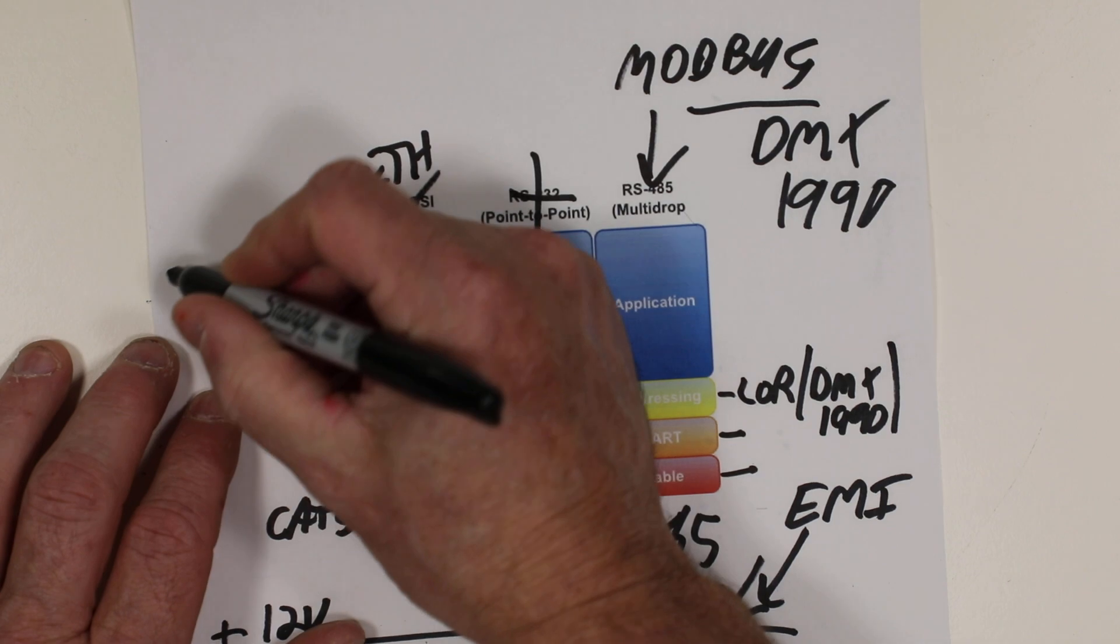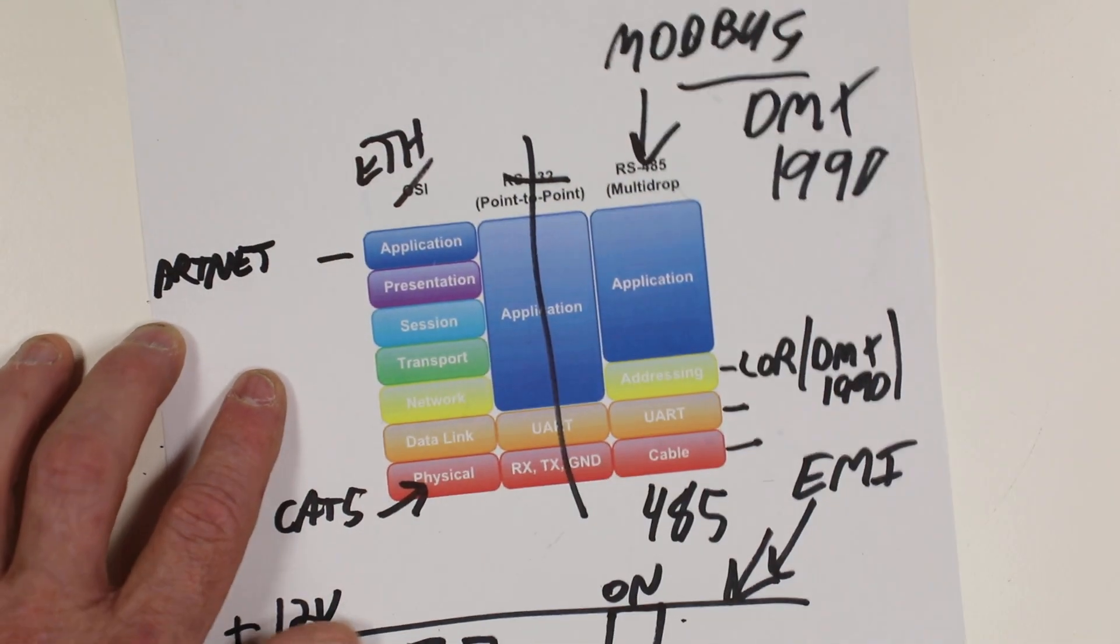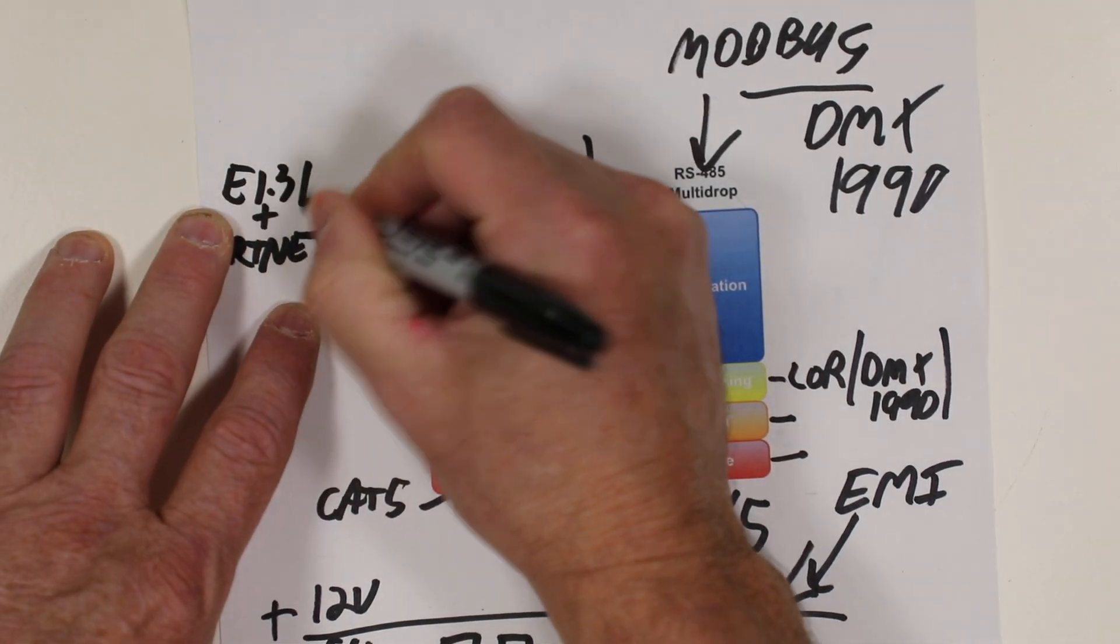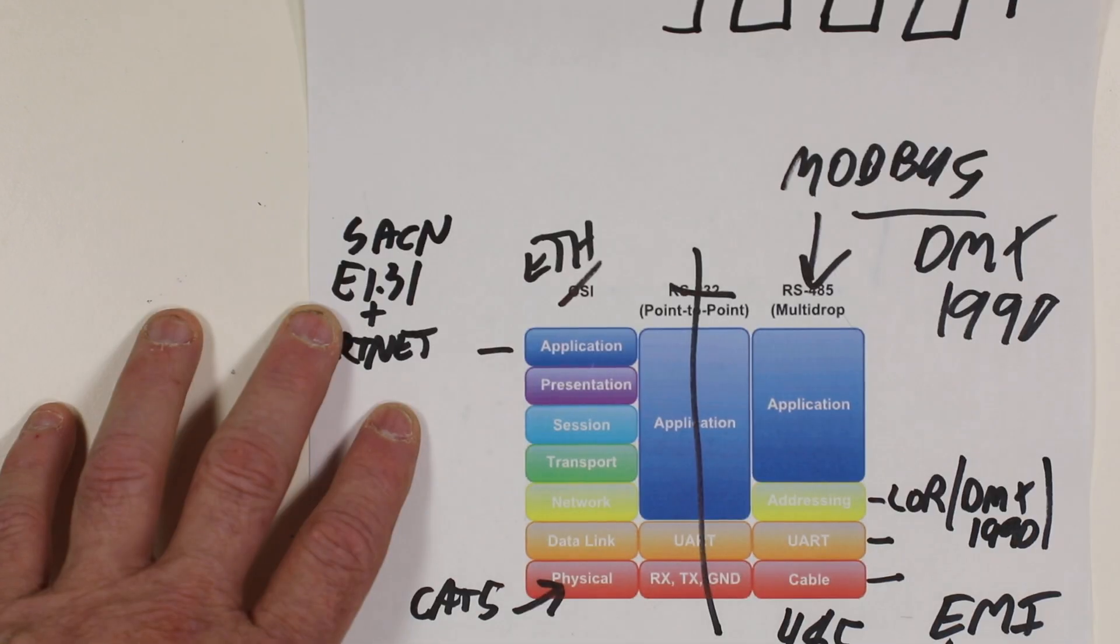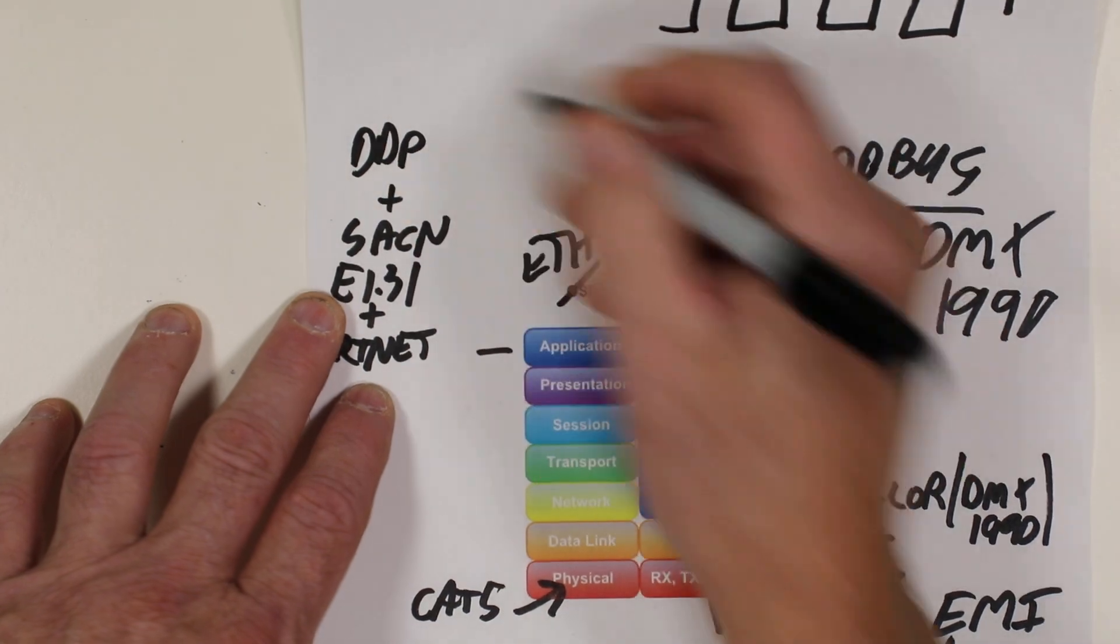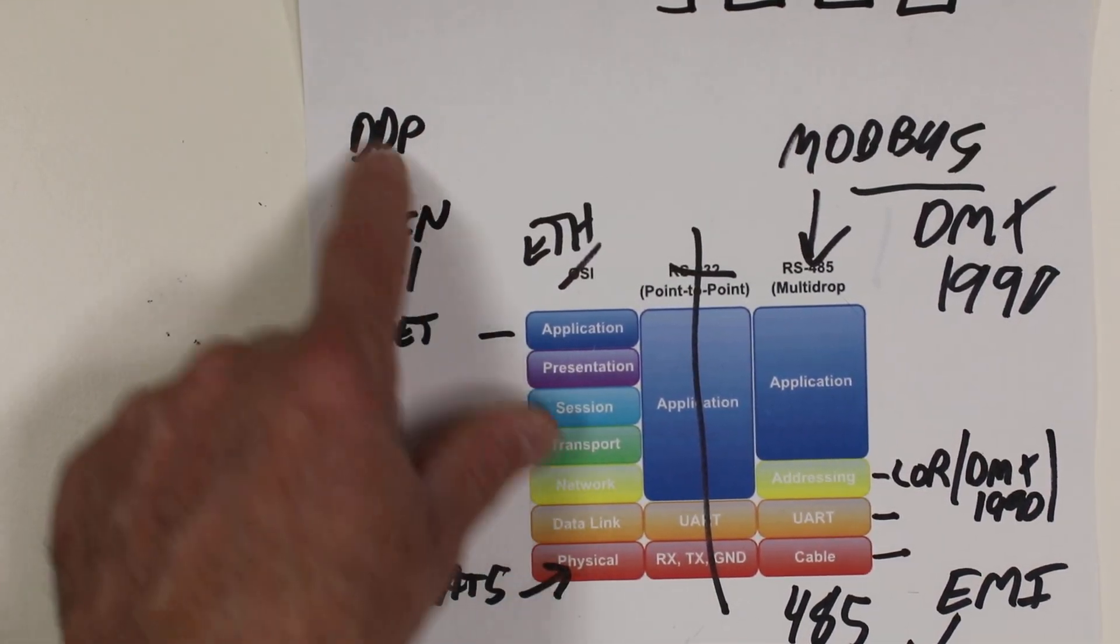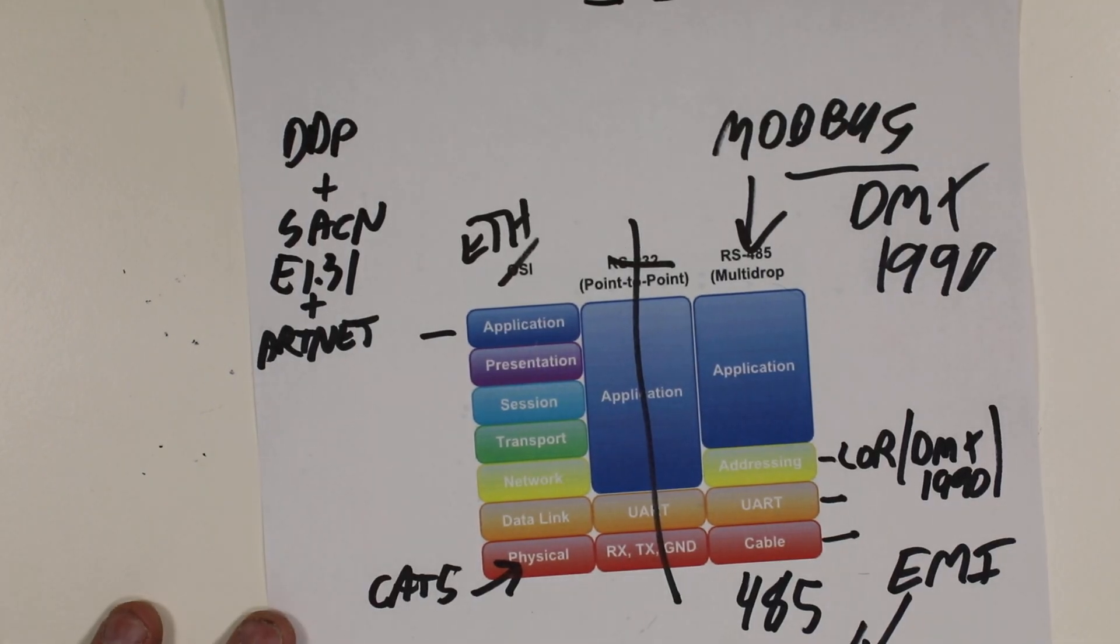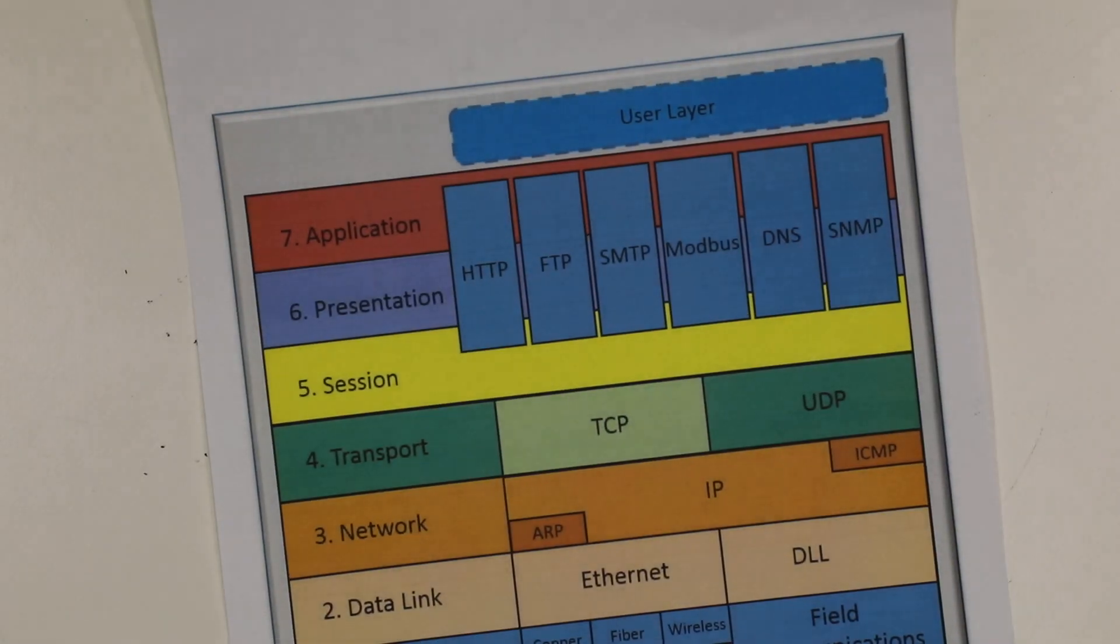So here we have ARTnet, which is used by the lighting industry. And then we also have E1.31, or also called SACN. And then we also have DDP, which is a newer protocol. So all of these are at this application level. And we're not talking about that. We have another video that follows this one on how that works. So let's talk about this level in between. So let's go to a little bit more detailed diagram here.